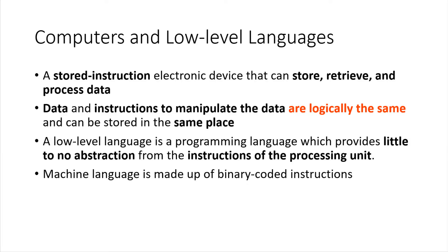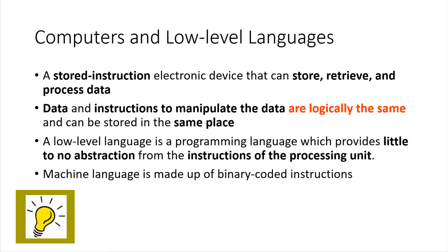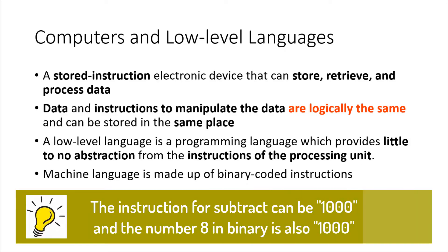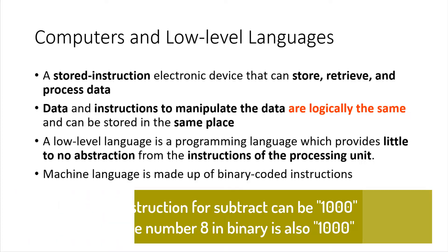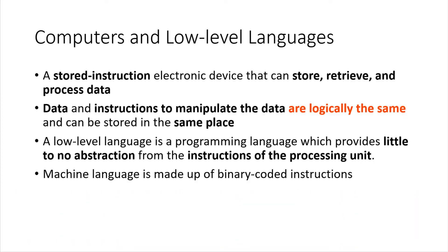As you might have already guessed, data such as letters and numbers, and instructions to manipulate data, are logically the same. That is, they are both represented using binary values. And so we can store the data and the instructions to manipulate the data in the same place, in memory.